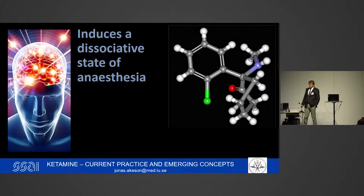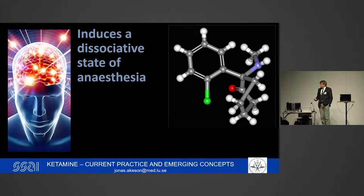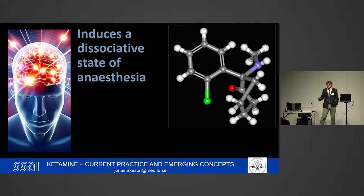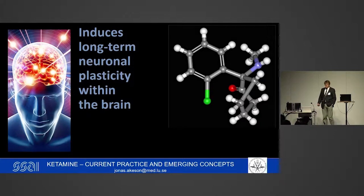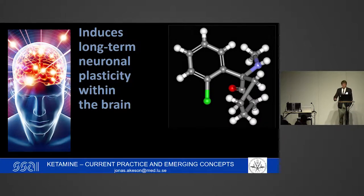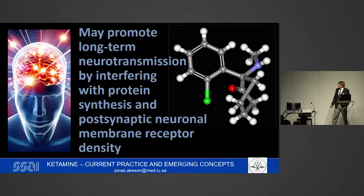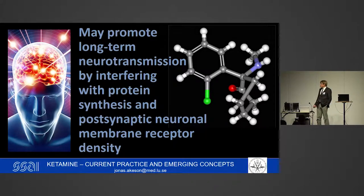Ketamine is believed to induce a dissociative state of anesthesia. We don't know exactly how that happens, but we believe that the limbic system and the hypothalamus are activated and that their connection with the cortex is disrupted somehow. We also know that ketamine may induce long-term neuronal plasticity within the brain. We think it may promote long-term neurotransmission by interfering with protein synthesis and post-synaptic membrane density of receptors.